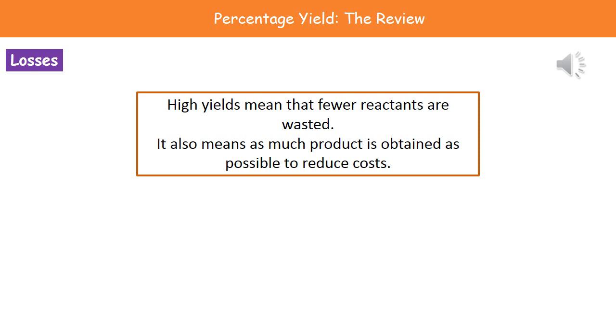The last thing to remember then is that when we've got these high yields, that just tells us that we're wasting fewer of the reactants we started with. So the closer to 100% it is, the better it is because the more sustainable that process will be. If we've got less waste in terms of the reactants, then that process can happen for a longer period of time without having to involve new reactants. Now it also means that we're getting as much product as possible, which means that we're going to be reducing our costs. Anytime we can reduce costs is a bonus because that means that when we then go on to sell that chemical, the company can make more profits.